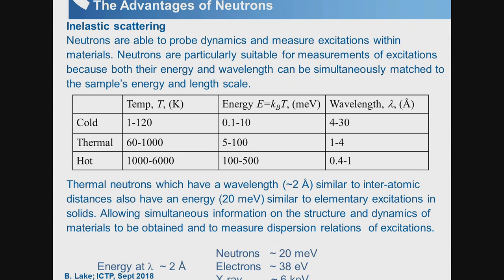This matching means you can measure the full Brillouin zone — excitations over the full Brillouin zone as a function of wave vector and energy. For 2 Å electrons, the energy is of the order of electron volts, not milli-electron volts, and for x-rays it's kilo-electron volts, so instrumentation is much more complicated with x-rays.